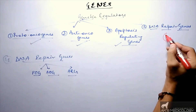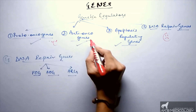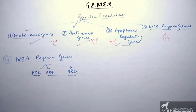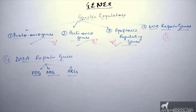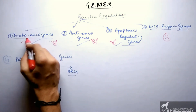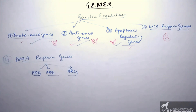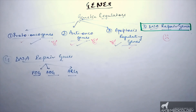If DNA repair genes are injured, all proto-oncogenes, anti-oncogenes, and apoptosis regulating genes go unchecked. Any injury to them would not be repaired, and the genome would remain injured, continuously producing the effects of mutated proto-oncogenes, mutated anti-oncogenes, and mutated apoptosis regulating genes. Therefore, DNA repair genes are the most important genes and must remain active to keep a check on all other genes. That concludes the mechanism of genetic changes in cancer.